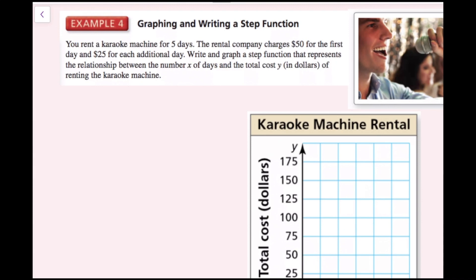Example 4: you rent a karaoke machine for five days. The rental company charges $50 for the first day and $25 for each additional day. We write and graph a step function relating x days to total cost y in dollars. For the first 24-hour period — 0 less than x less than or equal to 1 — the cost is $50.